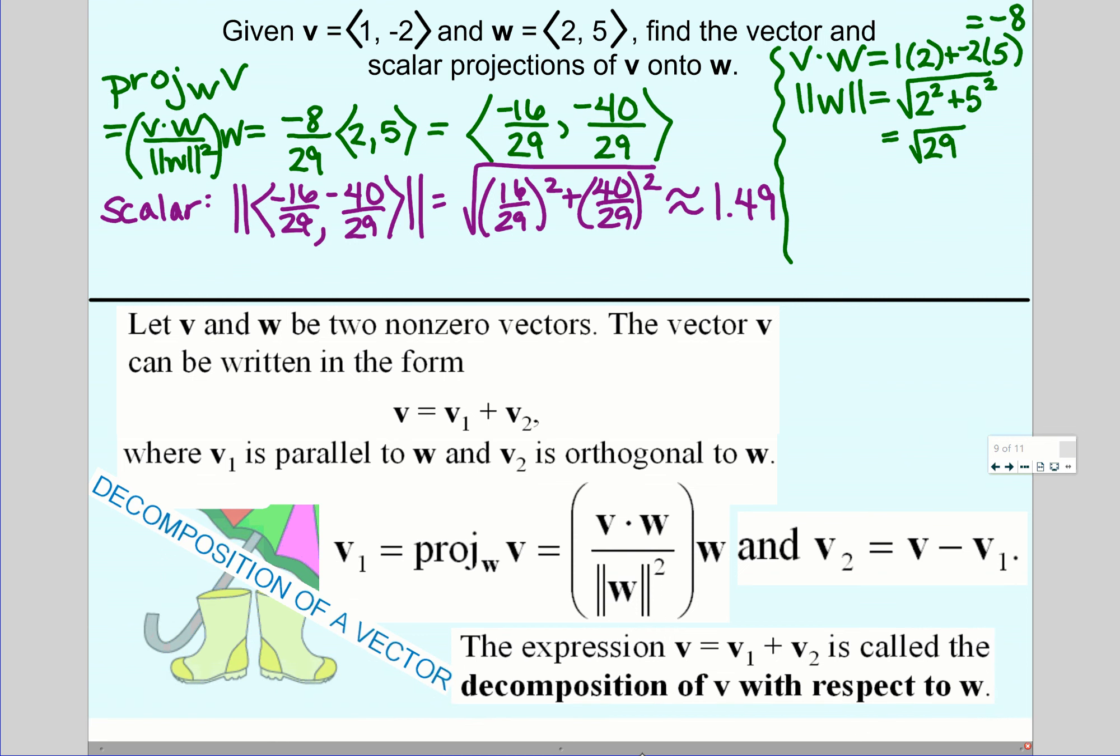The last thing that we're going to do is actually use this projection formula to decompose a vector. When we decompose vector v, our job is to find two new vectors that add to get to that vector, which if that's the only specification, there's going to be an infinite number of answers. When we decompose, we break it into two parts in two special ways. We want one of the vectors to be parallel to a vector, call it w, and we want another vector to be orthogonal to w.